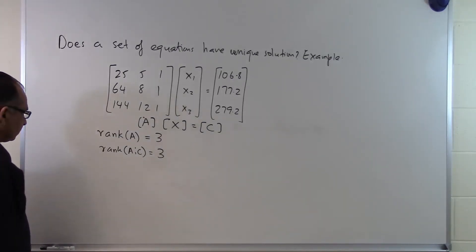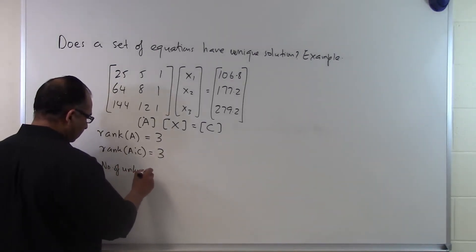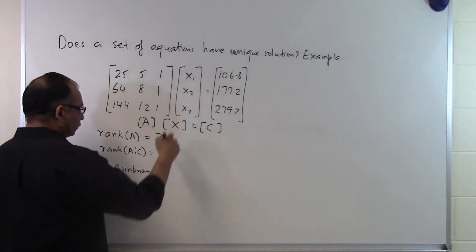And then the number of unknowns, which we can see here, is 1, 2, 3, which is 3.